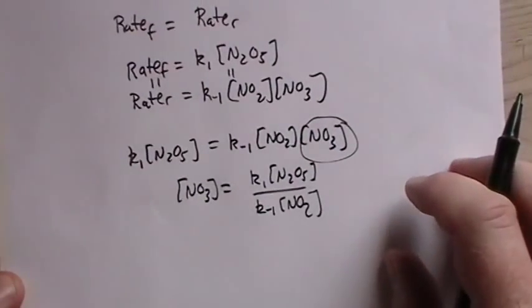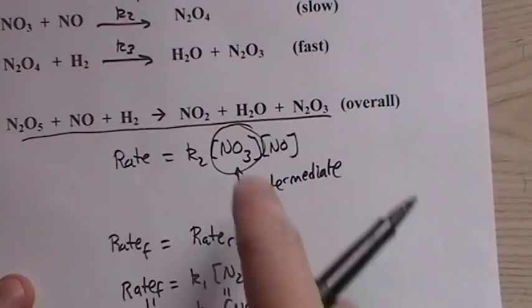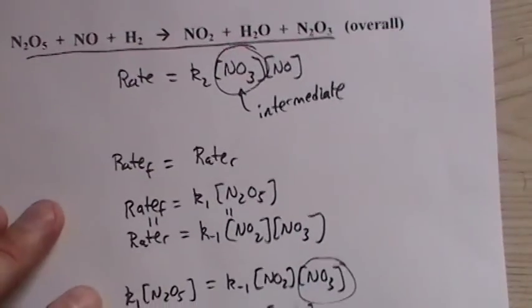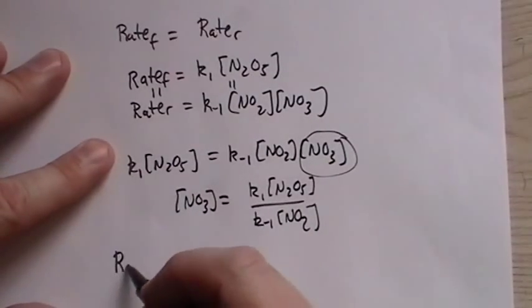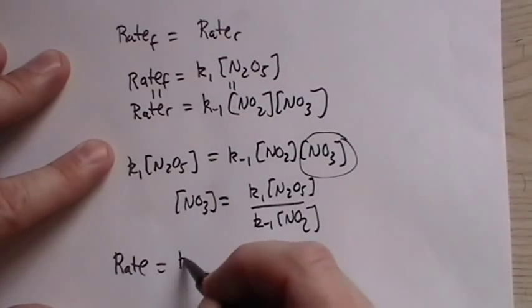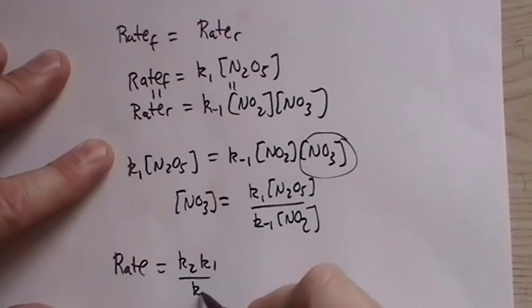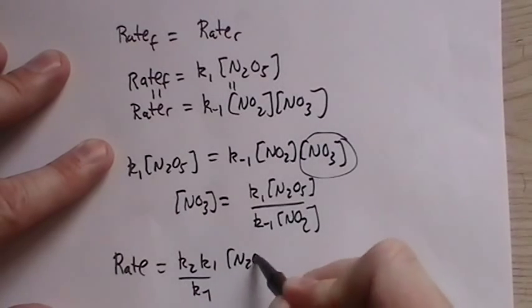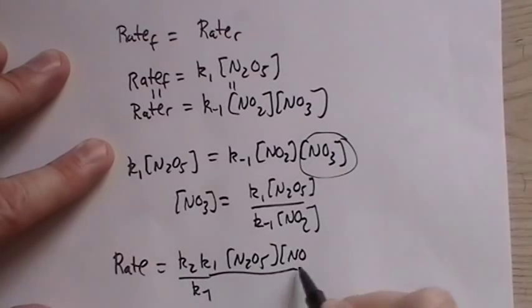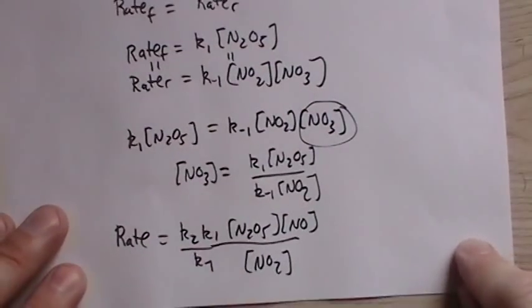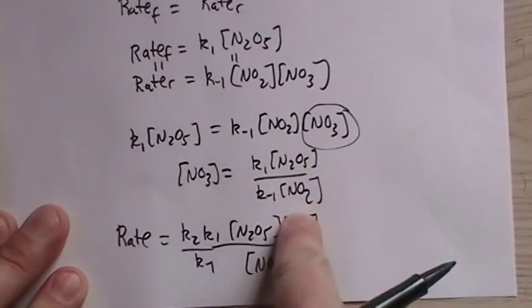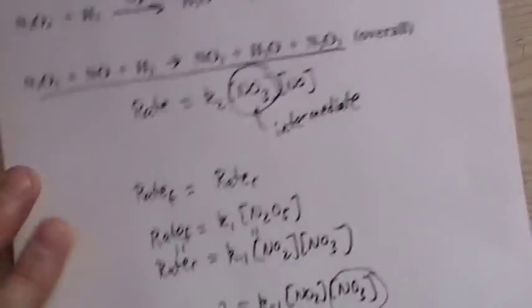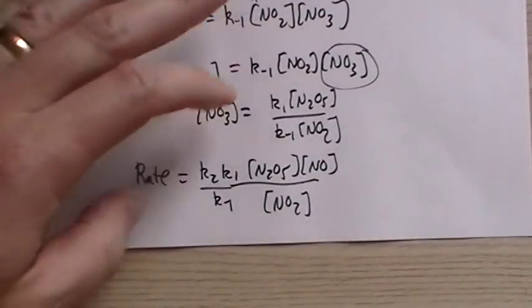Now, the reason we did this is that if we can solve for NO3, which is a part of this rate law that we wanted to get rid of, then we'd have NO3 in terms of NO2 and N2O5, which are both parts of this reaction. So they can be studied. So what we do is we solve for NO3, we end up K1, N2O5, K-1, NO2. Then, we have this NO3, and we're going to put it into this equation. So, by substituting this term into that above equation, we end up with the rate is equal to K2, K1, K-1, N2O5, NO2, or NO, NO2.